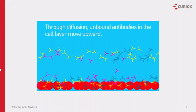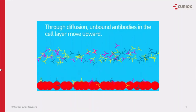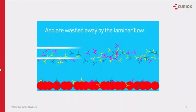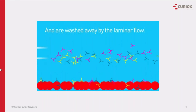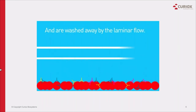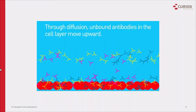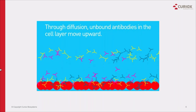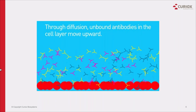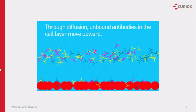Interestingly, when we perform an identical dispensing and aspiration in a conventional well plate, the action of dispensing and aspiration causes turbulence, which will lift the cells from the bottom of the plate, leading to cell loss.